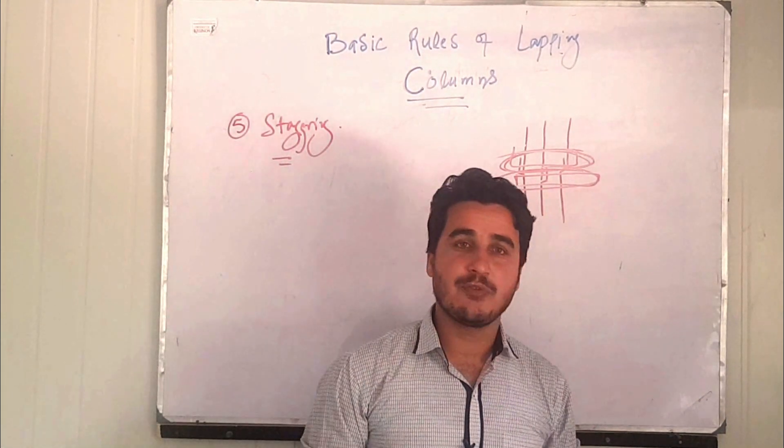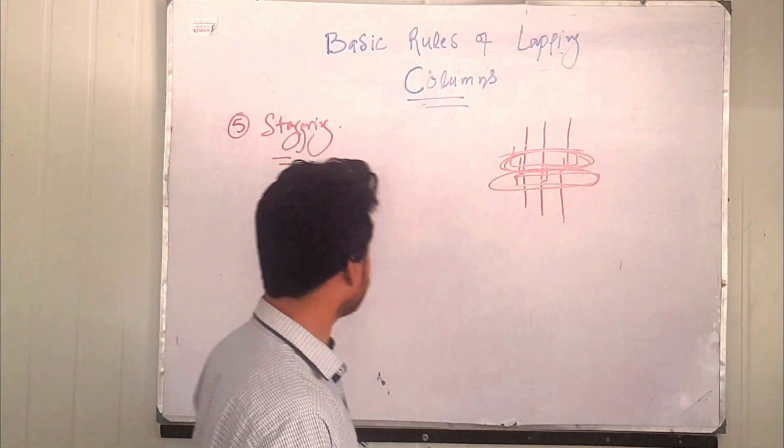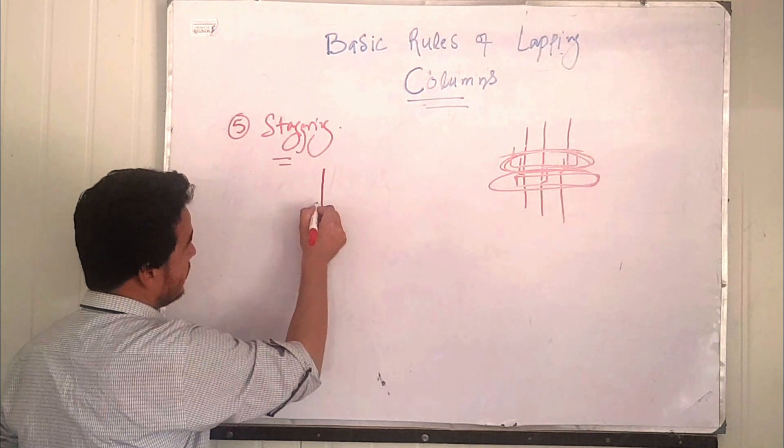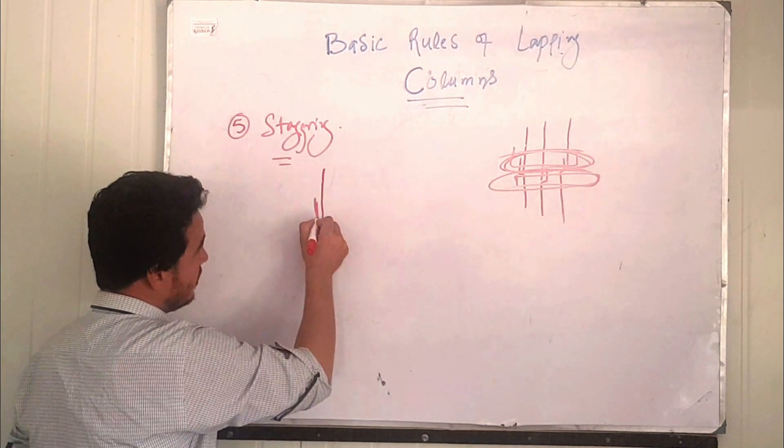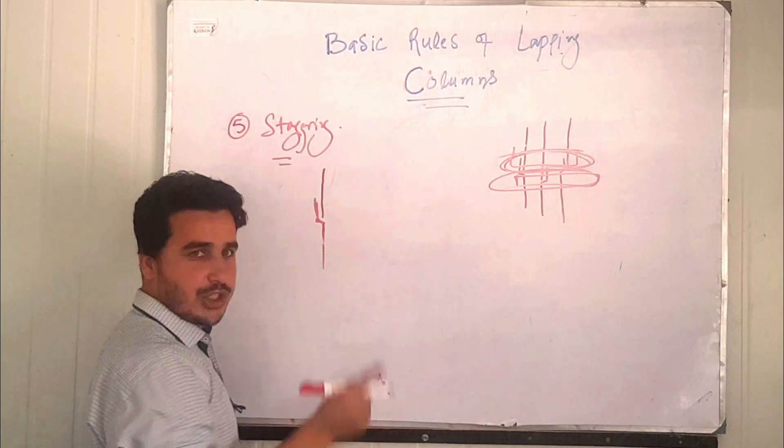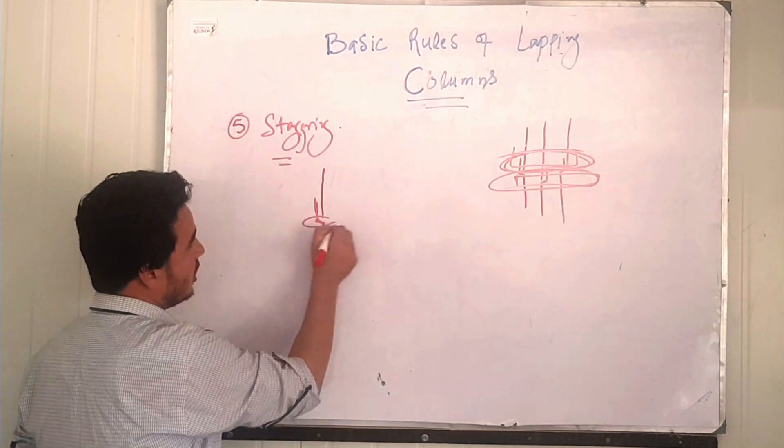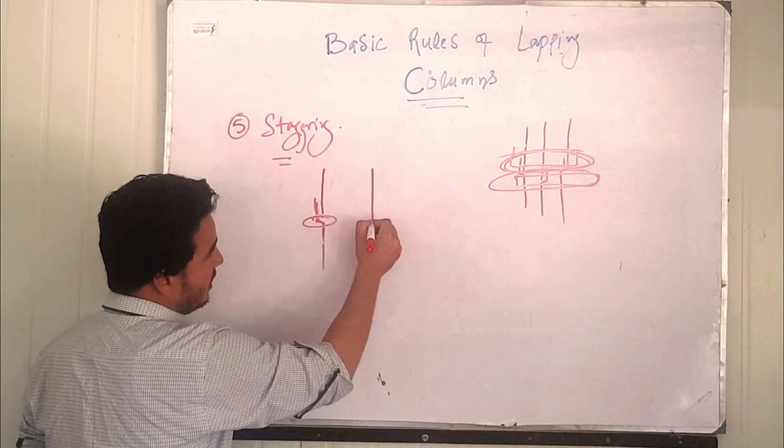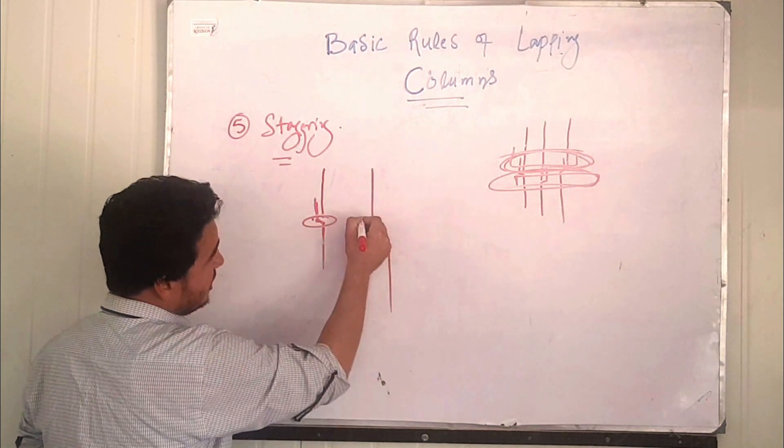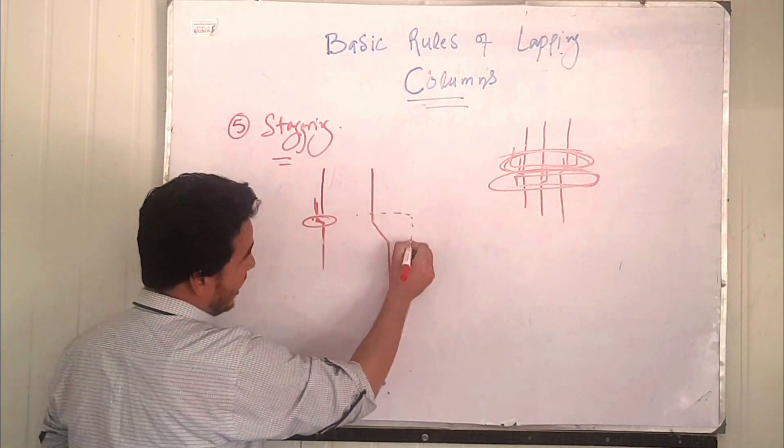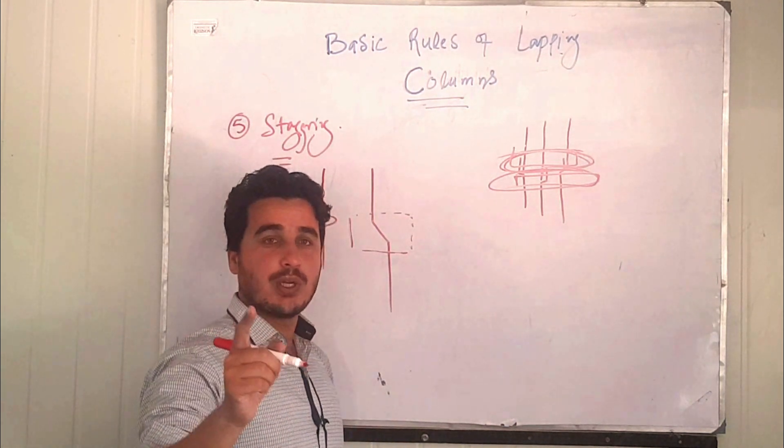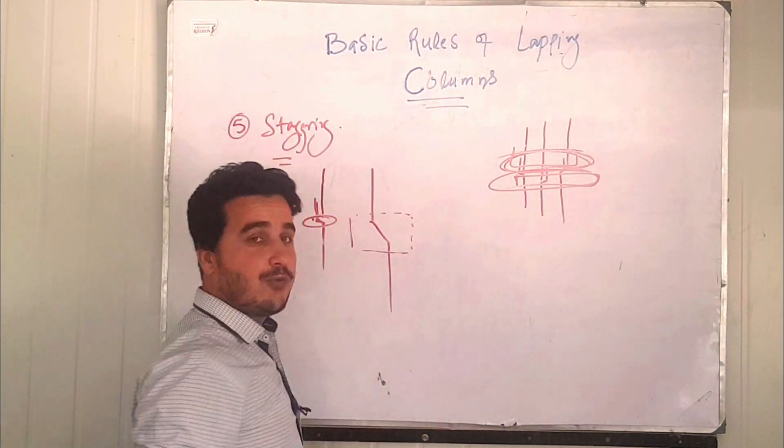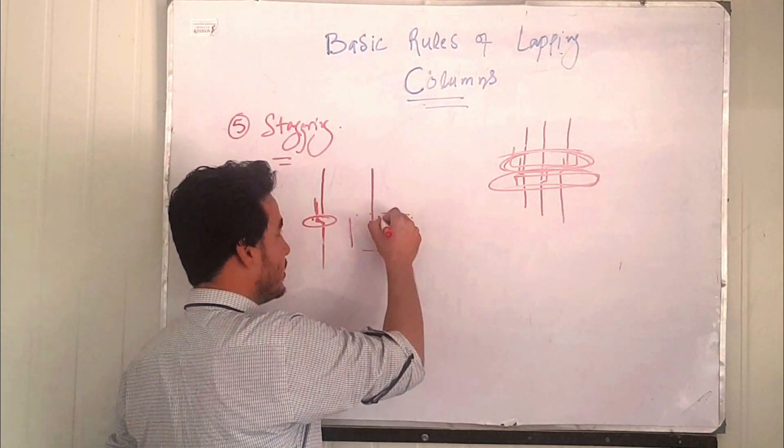Now I am using again and again this symbol. This is a symbol for juggle, we call it juggle. This juggling is allowed for columns, but in lapping zone, not everywhere. In lapping zone this juggle is allowed. What will be the length of this juggle? This is an important question.